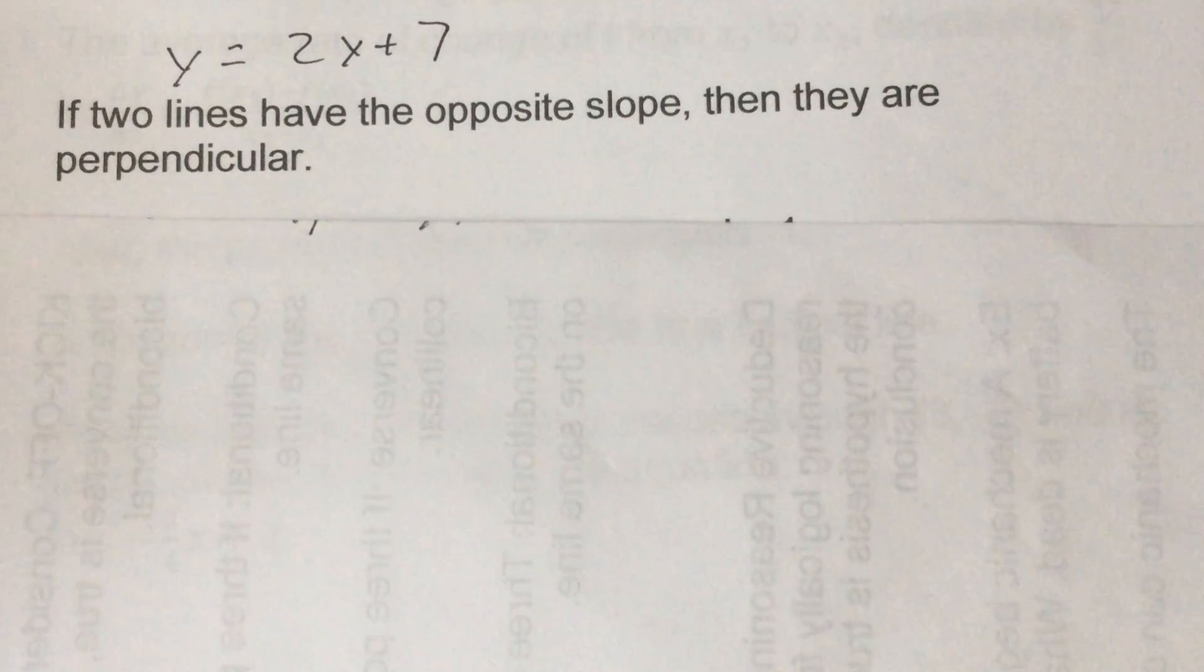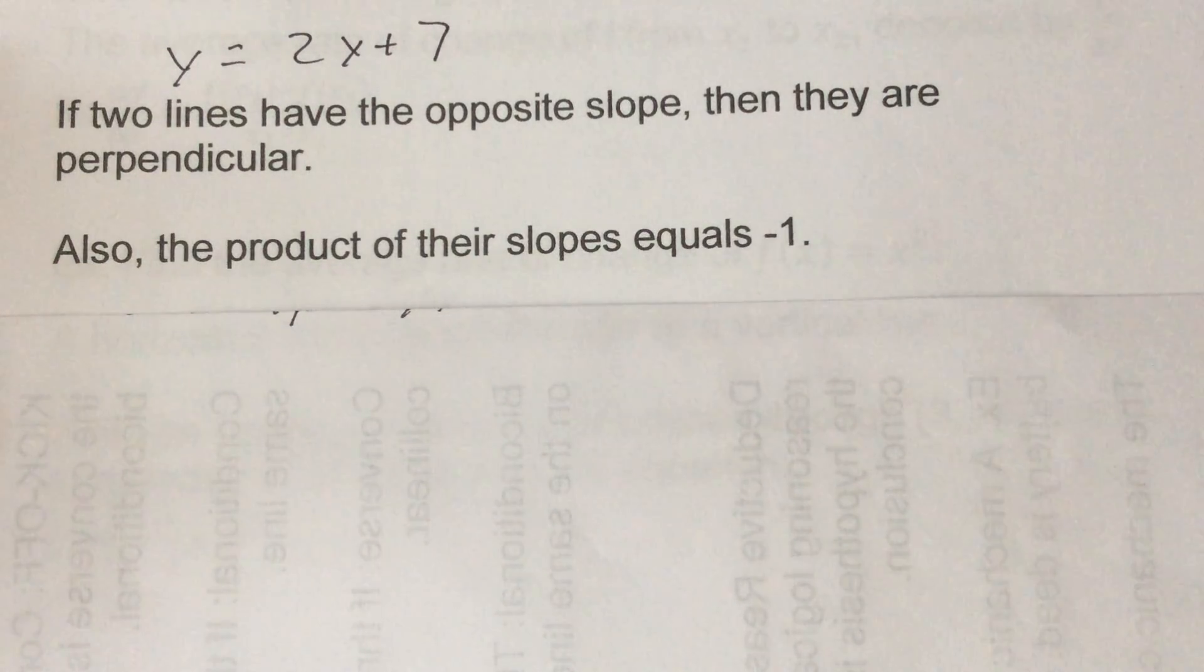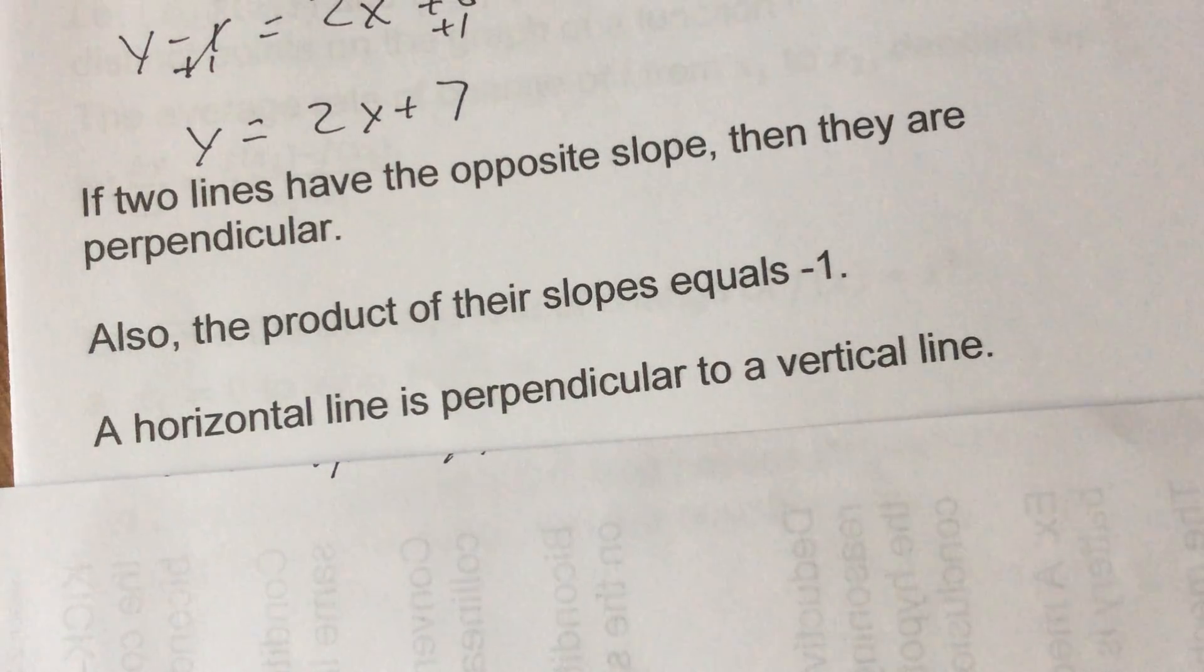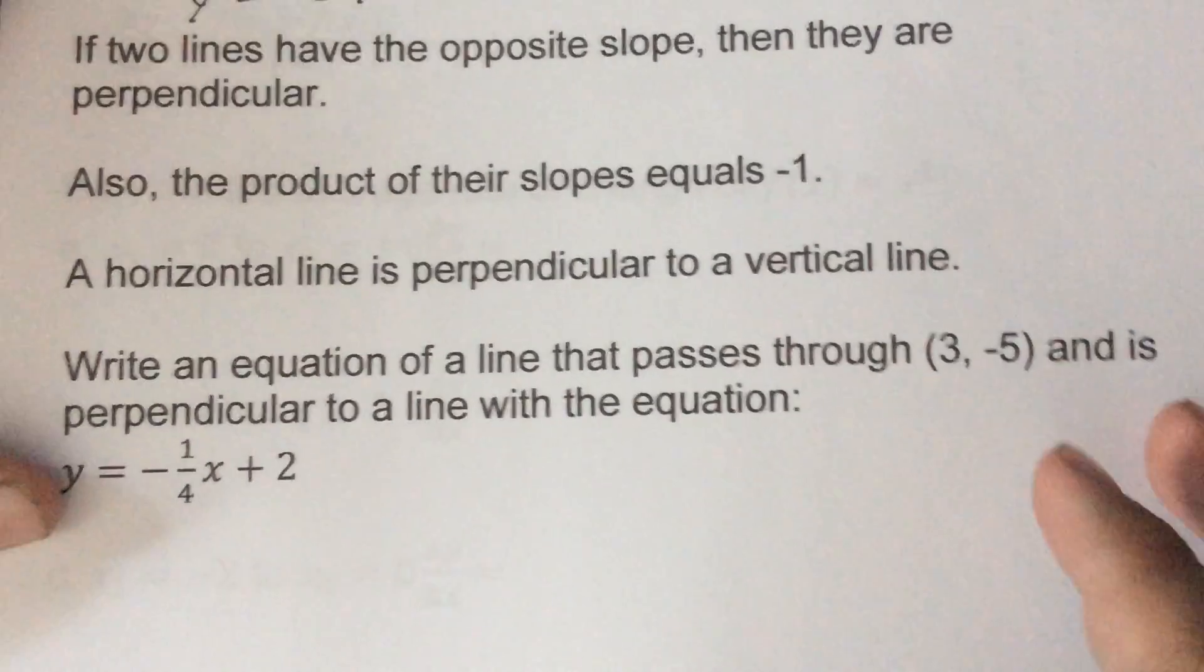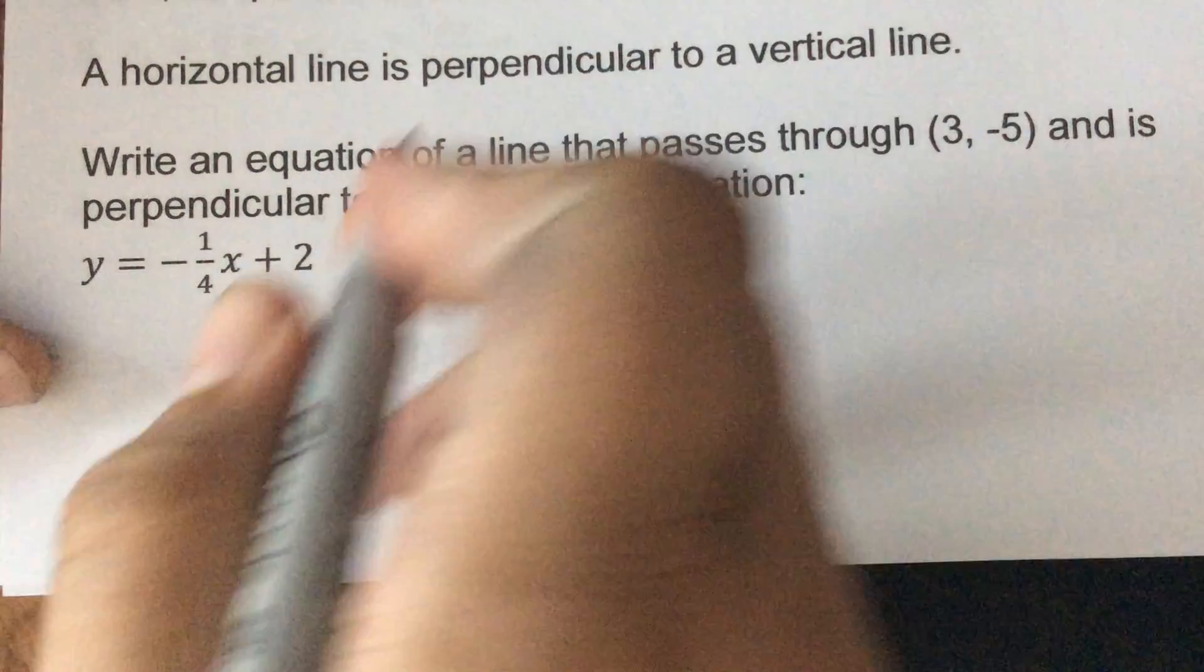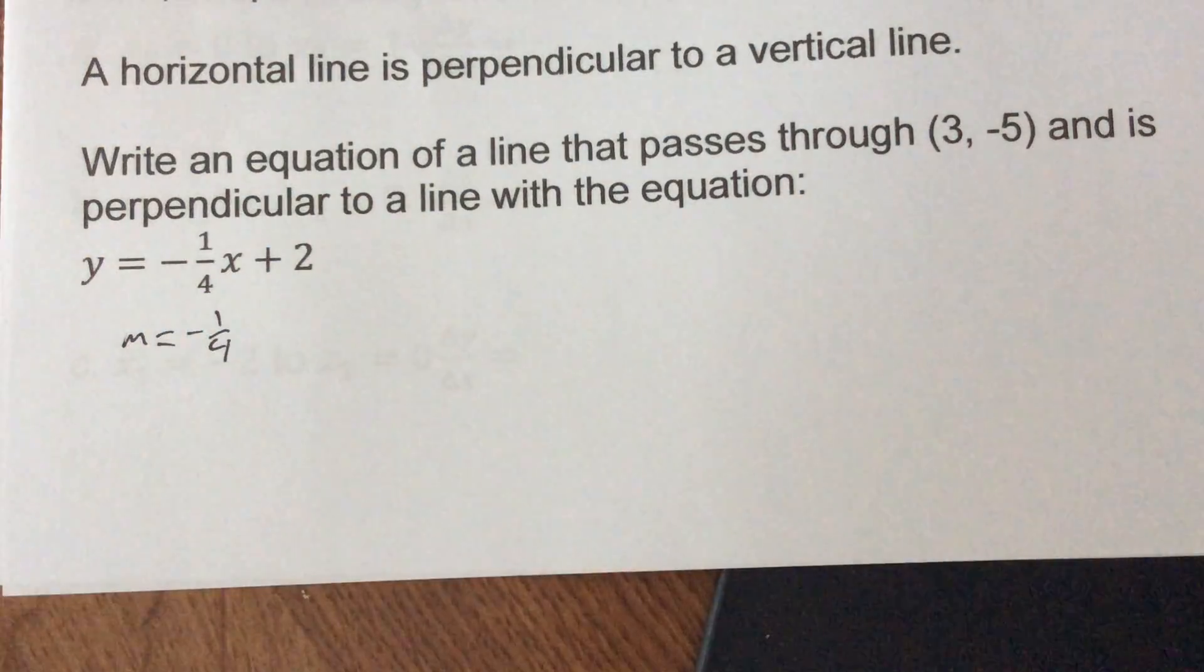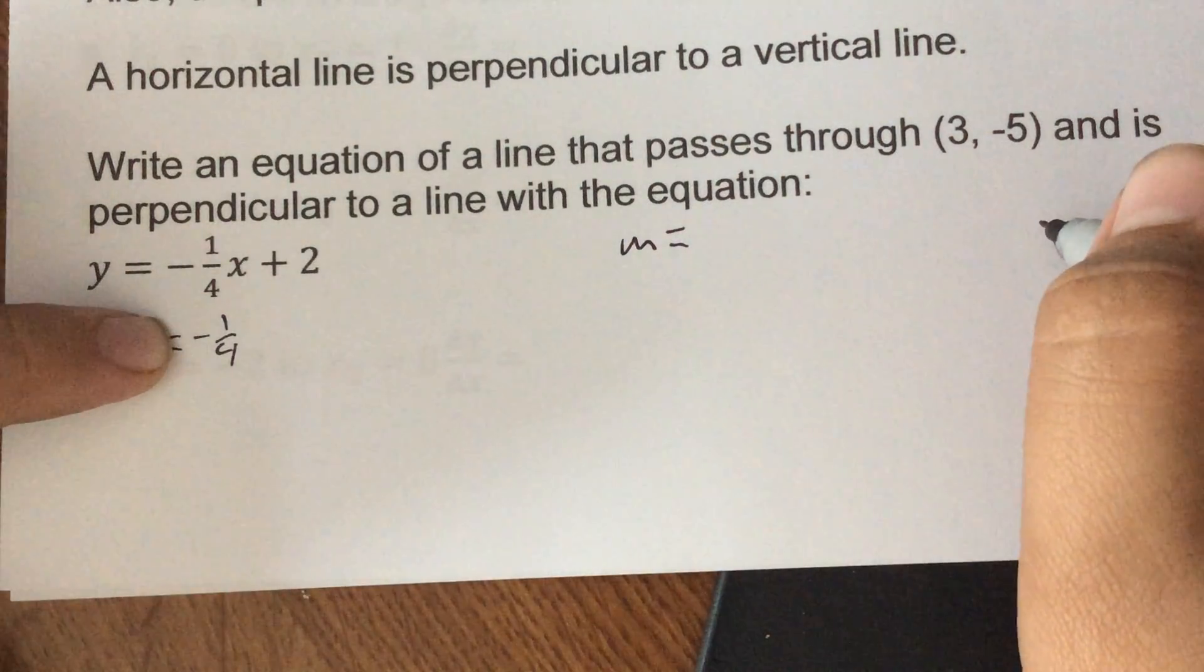Now if they have the opposite slope then they're going to be perpendicular. So now we look as the product of the two slopes, both it and its perpendicular slope would equal negative 1, and a horizontal line will always be perpendicular to a vertical line which kind of makes sense. Write an equation one that passes through the point (3, -5) and it's perpendicular to a line with the equation y equals negative 1/4 x plus 2. So m in this case would equal negative 1/4, so we're going to flip it and change the sign. So the slope we need would be negative will become positive and 1/4 will become 4, and that's what we're going to use.